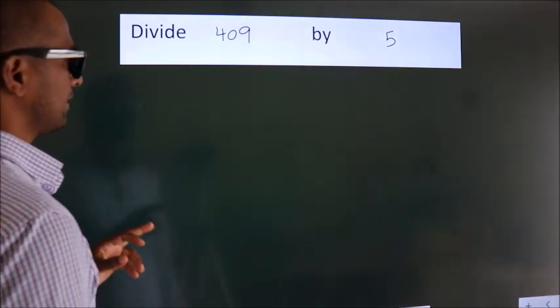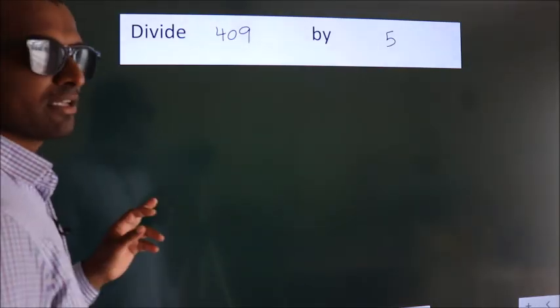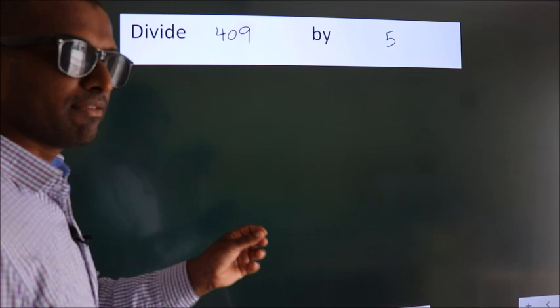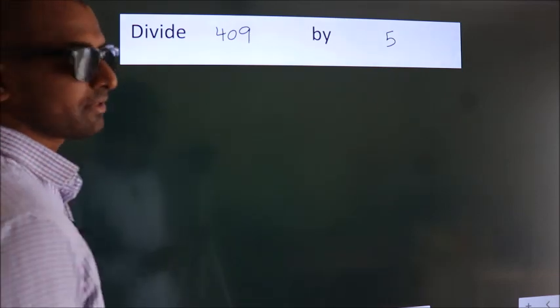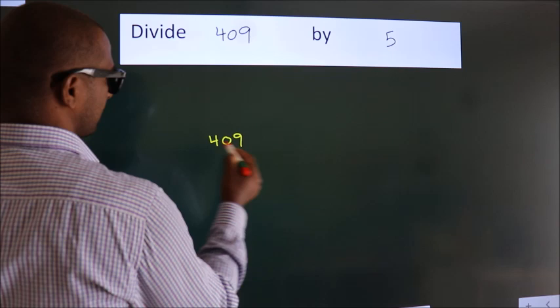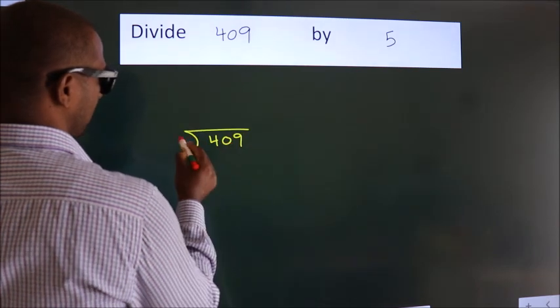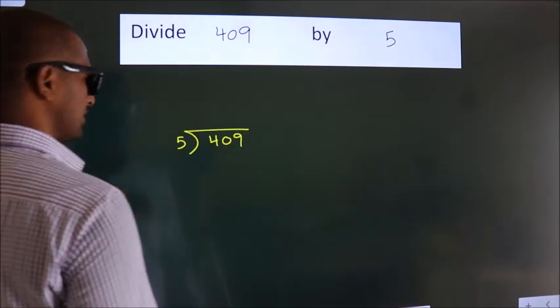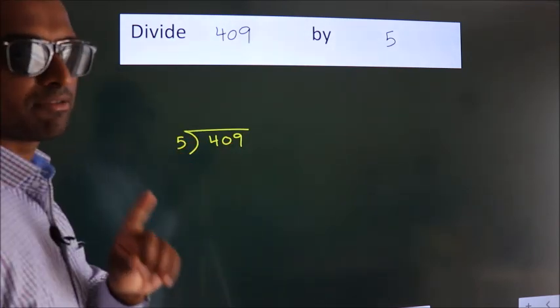Divide 409 by 5. To do this division we should frame it in this way: 409 here, 5 here. This is your step 1.